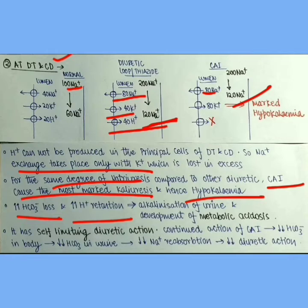Also we now understand that carbonic anhydrase inhibitors have self-limiting action because continued use of carbonic anhydrase inhibitor leads to loss of bicarbonate in the urine. So the bicarbonate stores in the body are depleted. Now less bicarbonate will come in the urine. This bicarbonate was responsible for sodium reabsorption. So now there will be less sodium reabsorption. And less sodium reabsorption means less diuretic action. So diuretic action decreases with continued use.